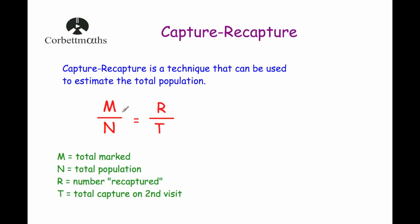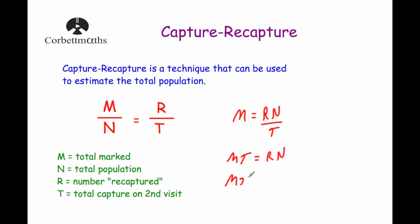Sometimes you'll see this formula rearranged to make N the subject. If we multiply both sides by N, we get M equals RN over T. Multiplying both sides by T gives us MT equals RN, and dividing both sides by R gives us MT over R equals N. In other words, the total population N equals the total marked on the first visit multiplied by the total captured on the second visit, divided by the number recaptured.